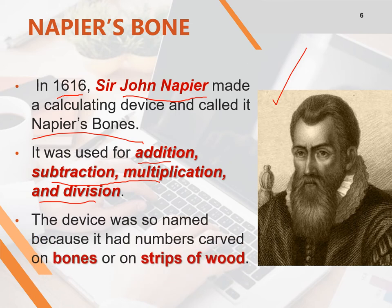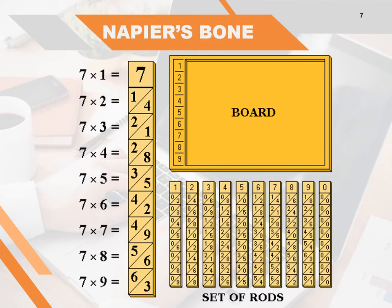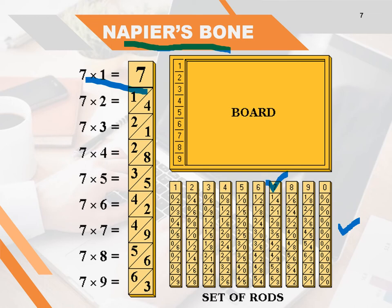The device was so named because it had numbers carved on bones or on strips of wood. You can see a set of rods and a board to fix the rods. Each rod will have numbers — for example, rod number 7 shows the 7th multiplication table. In this manner, you can do addition, subtraction, multiplication and division using the Napier's Bones.